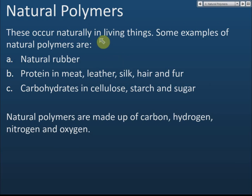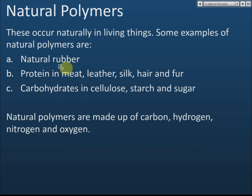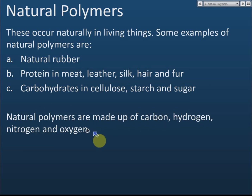In Form 5, we will discuss natural rubber, and we have only a brief introduction on proteins and carbohydrates, since you learn these in biology. Natural polymers are made up of carbon, hydrogen, nitrogen, and oxygen.